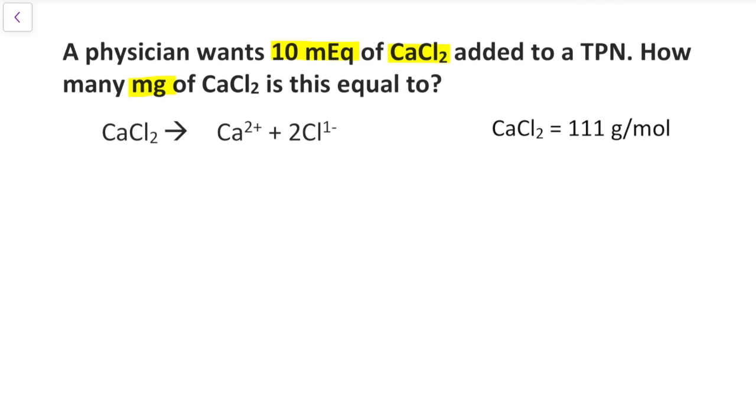Calcium chloride dissociates into one molecule of calcium with a positive two charge and two molecules of chloride, each with a negative one charge. When we calculate each of these, we get a valence of two.